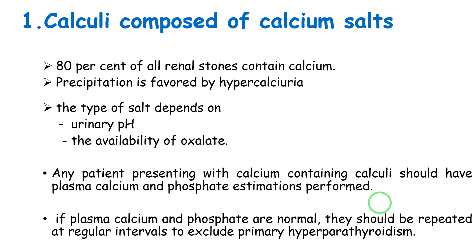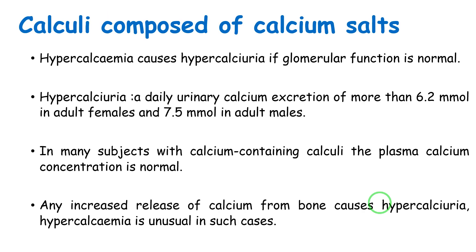Sometimes there is hypercalciuria without significant hypercalcemia. This occurs in osteoporosis, where calcium release from bone is increased, and in bone metastasis, where ionization of calcium from bone is also increased. Hypercalciuria is diagnosed when urine calcium excretion exceeds 6.2 mmol/day in females or 7.5 mmol/day in males.